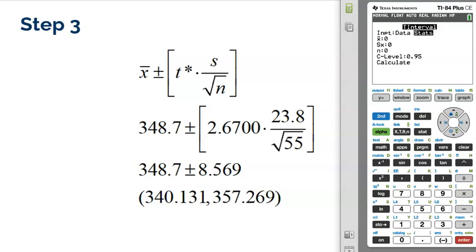So if we click on T-interval, there we actually have an option to do Data or Stats. Now we weren't given the actual data. The actual data would be how long each of those 55 flashlights lasted. We were just given the statistics, so we want to make sure the input is Stats. Then we're just going to enter in all that information that we were given in the problem. The mean was 348.7 minutes. The standard deviation was 23.8 minutes, and the sample size was 55. And then of course we have to tell the level of confidence. We were asked to do a 99% confidence interval, so we're going to put 0.99 there.